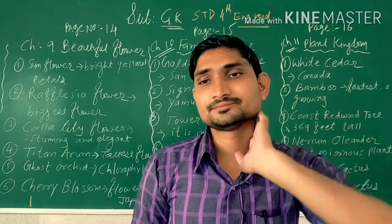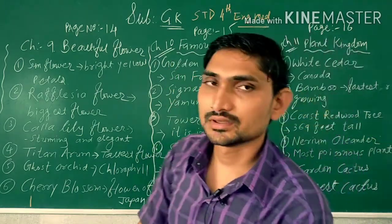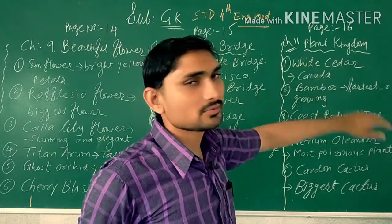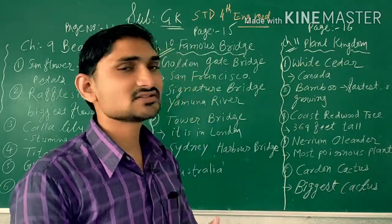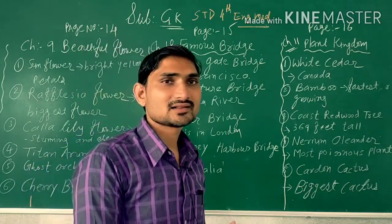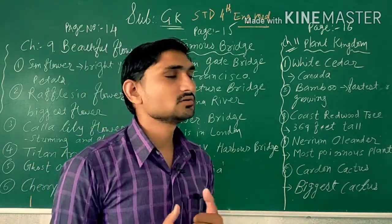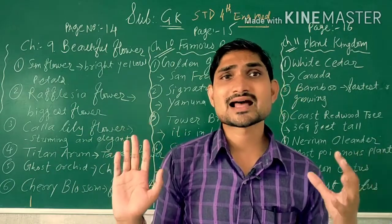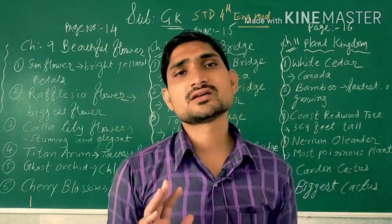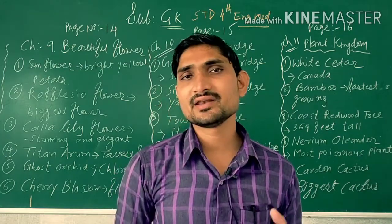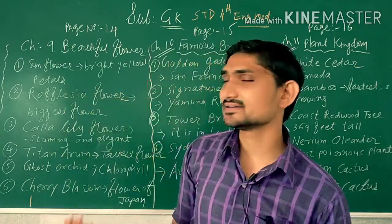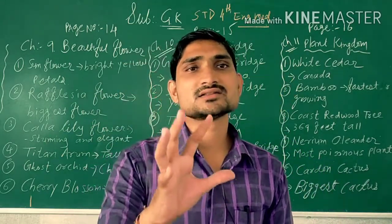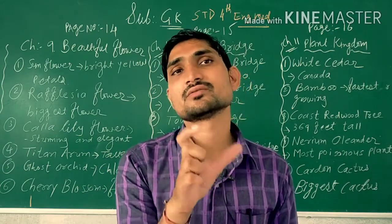Then we will see chapter number 11 - Plant Kingdom on page number 16. You will see different types of plant kingdom. Means, you will get the knowledge of plants - different types of plants are there, some are familiar and some are unknown. Here I have written the answer and the basic concept, clues given in your book. I will read and explain and then we will see the answer. On the right side, I will give a short intro on how you will remember this answer by reading one key word.